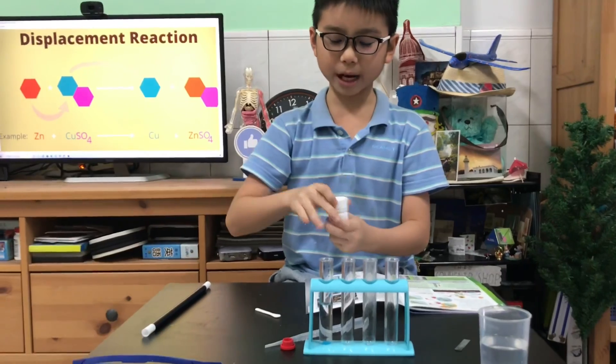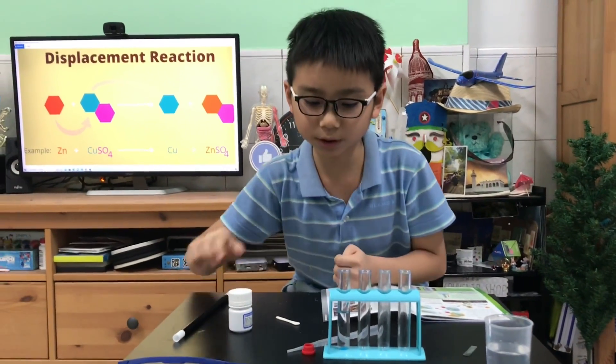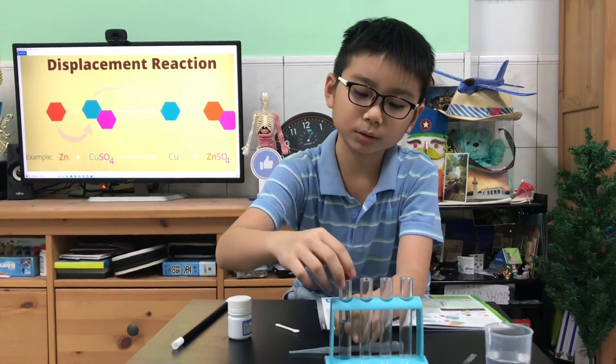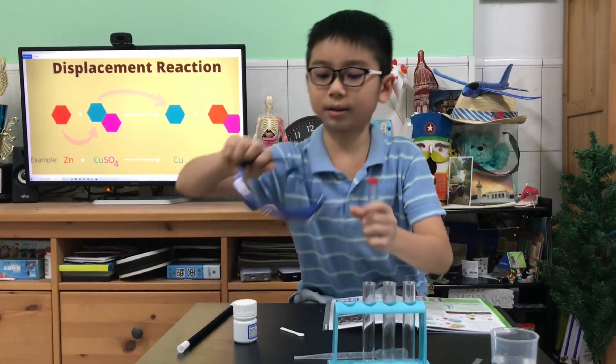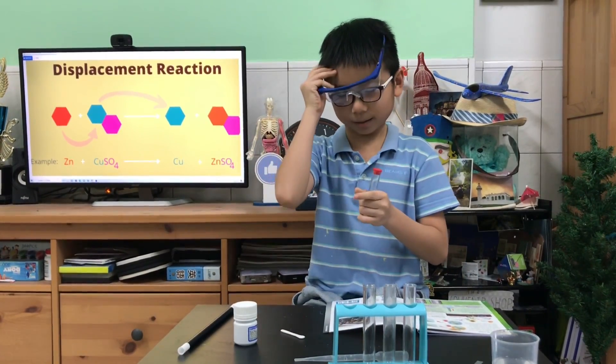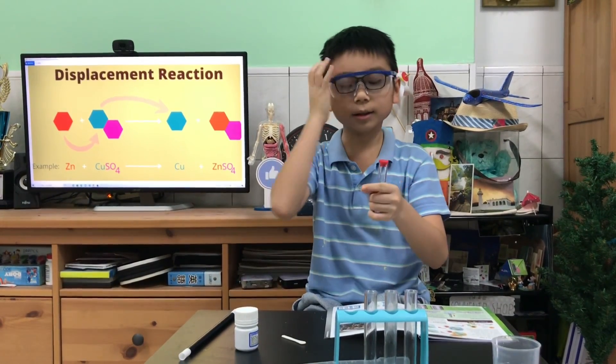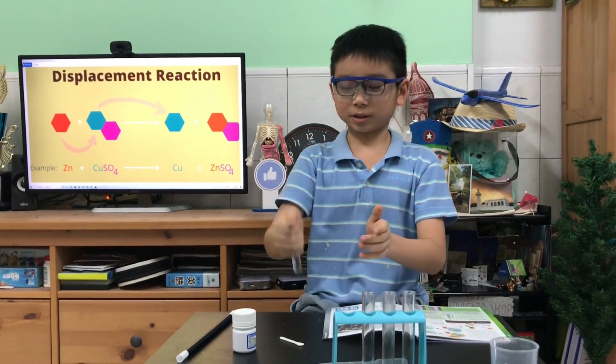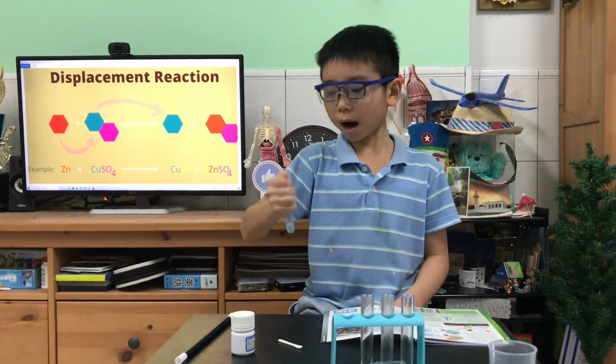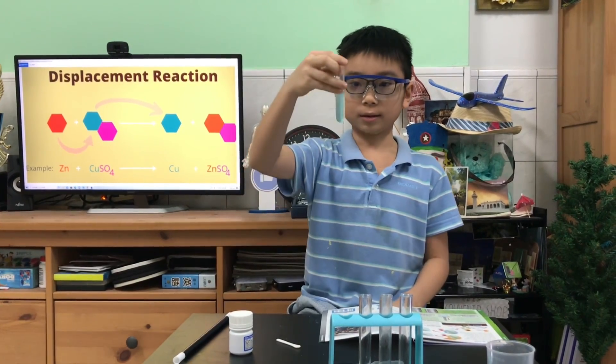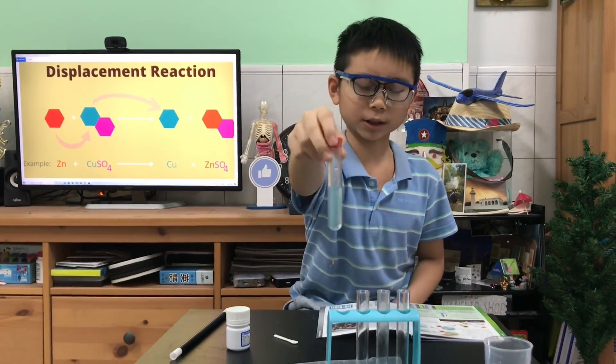So now we are going to dissolve this by shaking it. We're going to put on our goggles and we're going to shake it until it is dissolved inside this water. So it will become the copper sulfate solution.